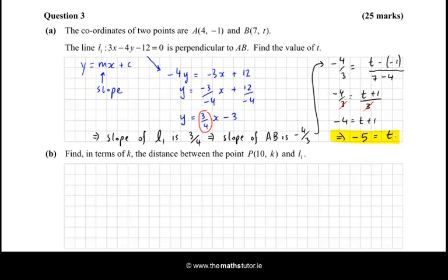Now, find in terms of k the distance between the point P(10, k) and L1. OK, so if we use the perpendicular distance from a point to a line formula, which is in your coordinate geometry section. And just to recap, your coordinate geometry section is page 18 and 19, and your perpendicular distance formula is at the top of page 19.